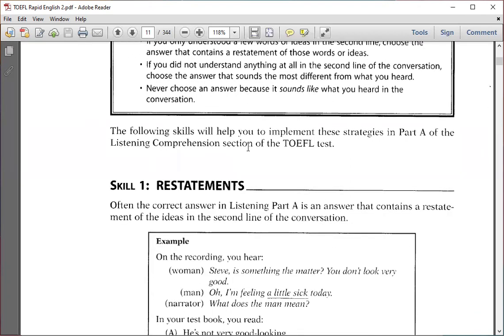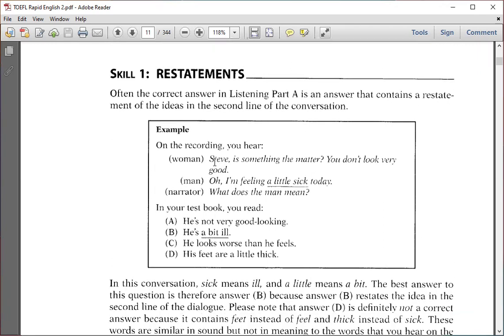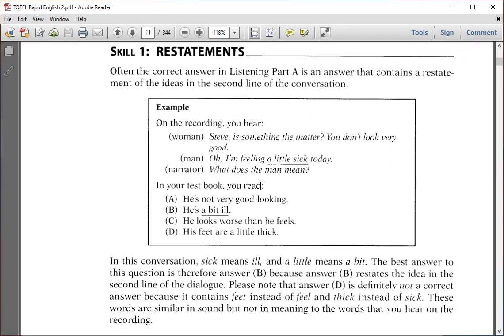Now let's go to Skill One. You are going to face dialogues followed by questions. There are six skills. Let's focus on Skill One: Restatement. The correct answer in listening Part A often contains a restatement. For example: "Is something the matter? You didn't look very good." "Oh, I'm feeling a little sick today." What does the man mean? A little sick? We do not find the similar sound. We focus on the restatement. Restatement from 'little sick' is 'a bit ill.'